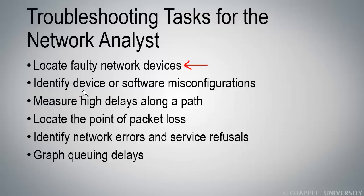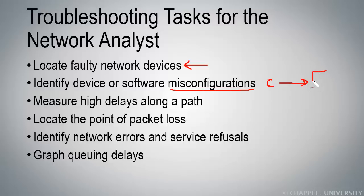We should also be able to locate devices or software that has been misconfigured. For example, a client may believe that another host is a DNS server and sends a DNS query out to that host, except that host does not support DNS — it's just a workstation. In that case, we'll see ICMP message responses coming back to indicate that it doesn't support services incoming on port 53.